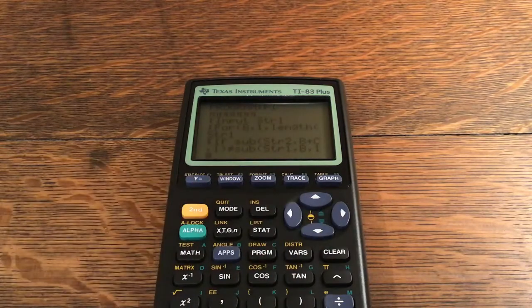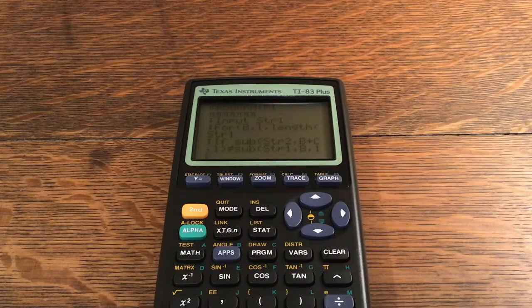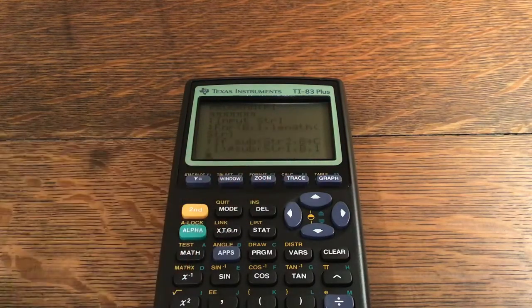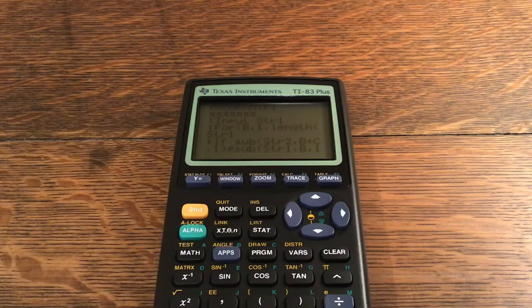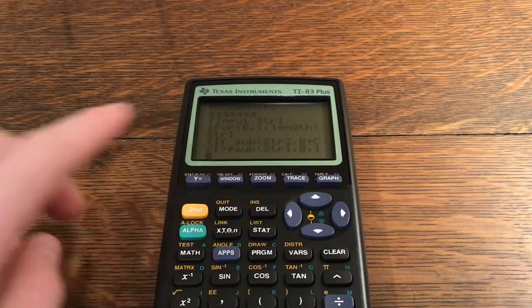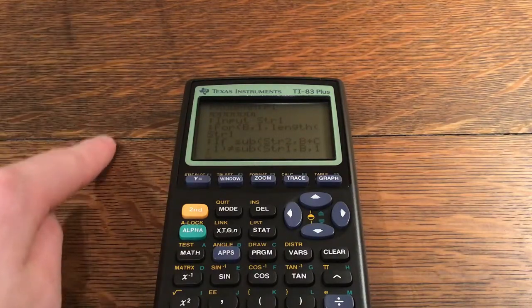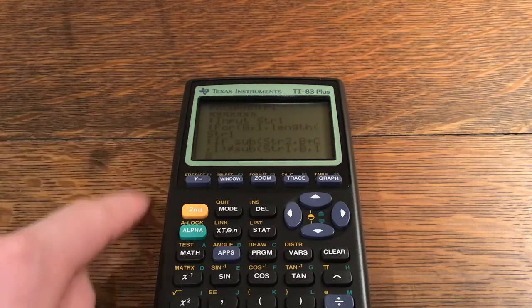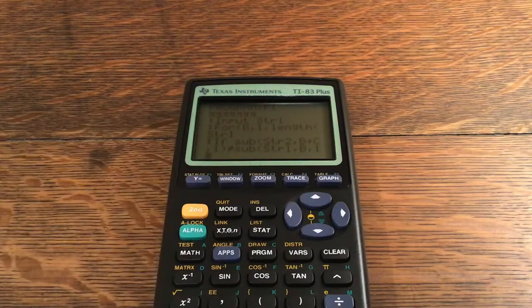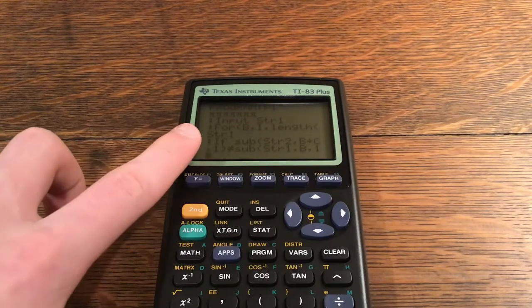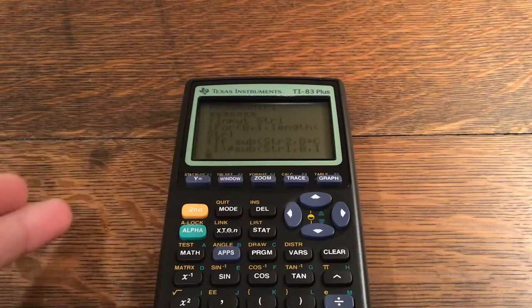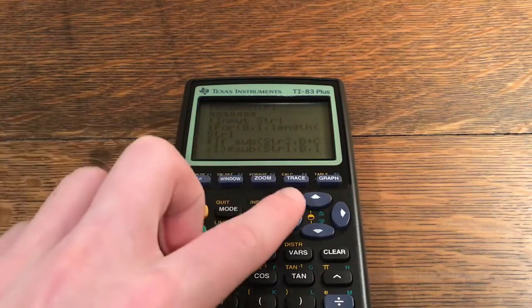If sub string two comma b plus c comma one is not equal to sub string one at b comma one. So c is a variable that I'll explain in just a second. What this line is doing is basically it's checking, it's going one at a time. So it's checking, okay, did he put three in? Yes. Did he put point? Did he put one four? And it checks to see to make sure that you put in everything right.